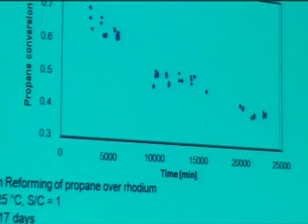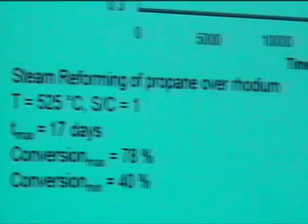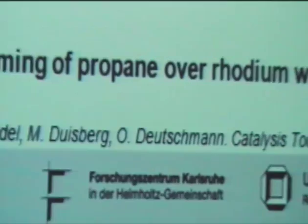I would like to show some conversion measurements of steam reforming of propane at a temperature of 525°C and a steam to carbon ratio of 1. This is a long-term measurement over 17 days. In the beginning the conversion is about 78% and it decreases with time. At the end of the measurement after 17 days, the conversion is only 40%, which means a strong reduction of conversion during steam reforming.